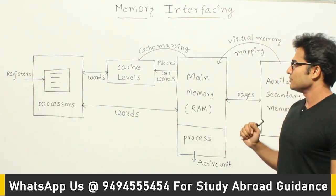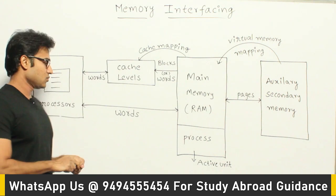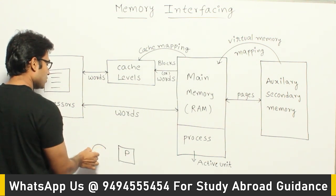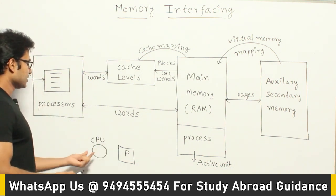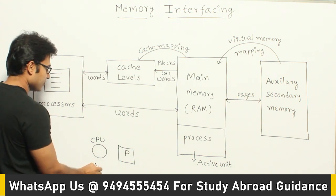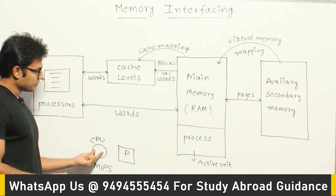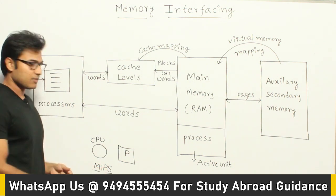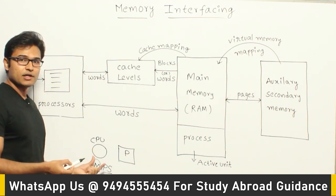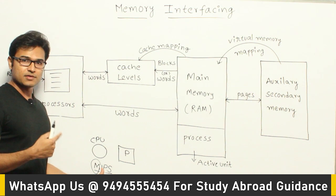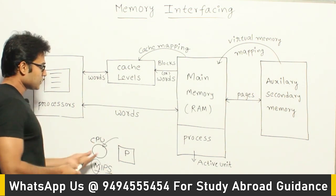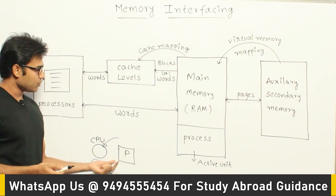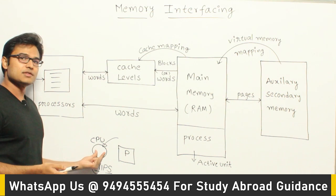Now let's see why we need main memory. Whenever you give any input — which is a program — it will be present in memory, and that program has to be given to the CPU. The speed of the CPU is generally measured in MIPS, which means million instructions per second — meaning the CPU can execute one million instructions in one second. The problem is: will you really be able to supply instructions to it at that rate? The main issue is that memory speed is less compared to the CPU.